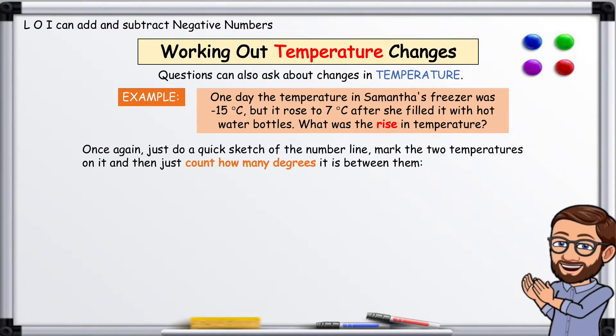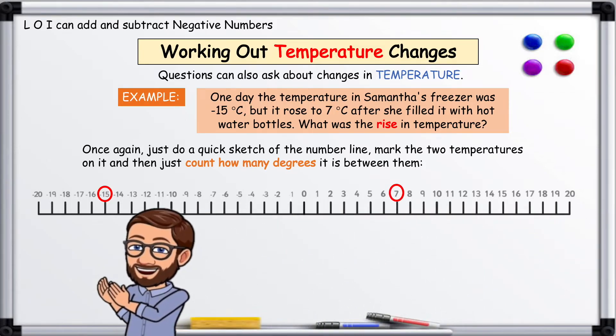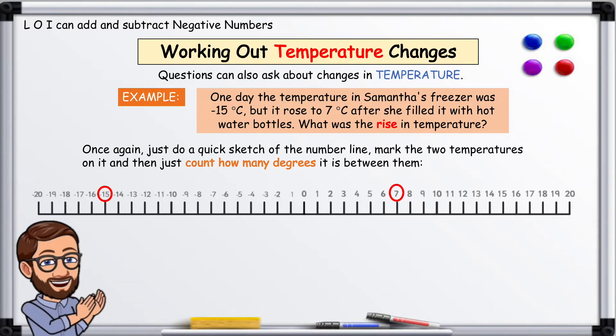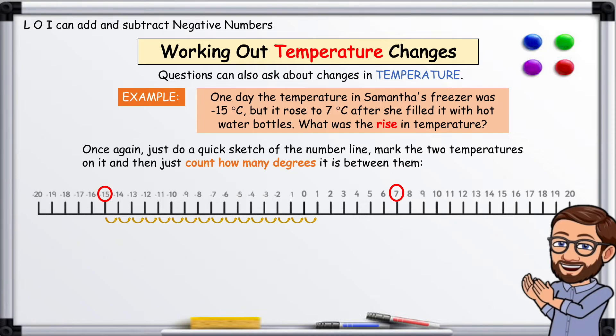Once again, just do a quick sketch of the number line, mark the two temperatures on it, and then just count how many degrees it is between them. 18, 19, 20, 21, 22. There's 22 places between them. So the answer is the rise in temperature of Samantha's freezer was 22°C.